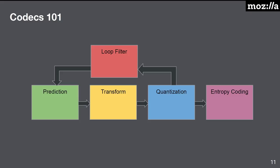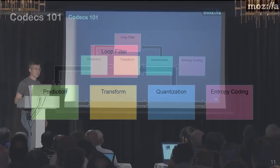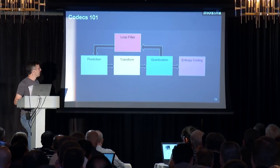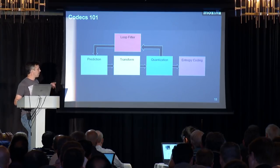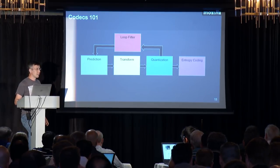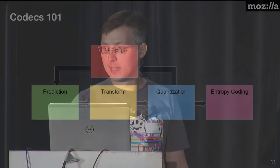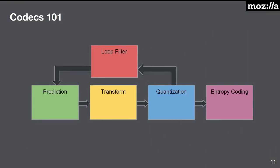How do video codecs work? Basically you've got a prediction stage that feeds into a transform stage, that feeds into a quantization stage that goes to entropy coding, and then there's a filter step to smooth out the artifacts introduced by the loss in quantization and prediction. When that gets fed back into the prediction stage, we call it an in-loop filter. Today I'm hoping to talk about things in all of these boxes that exist in AV1.